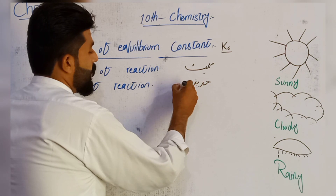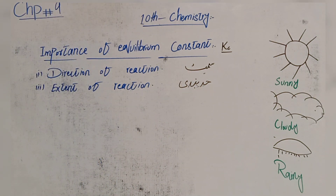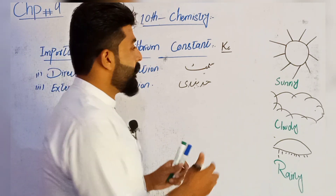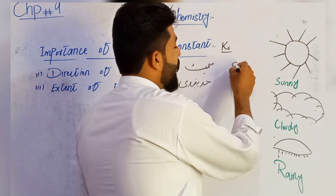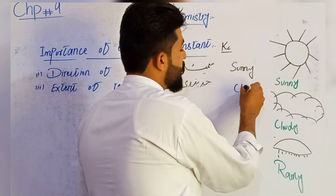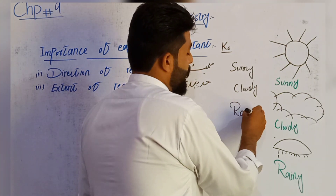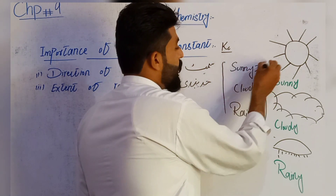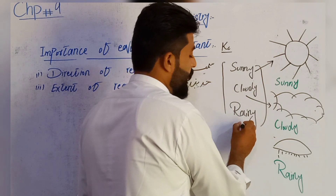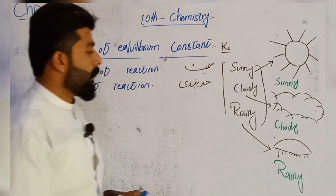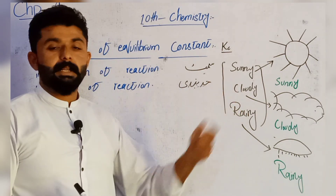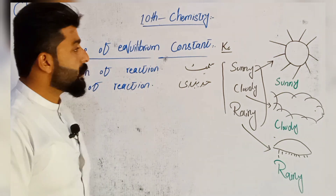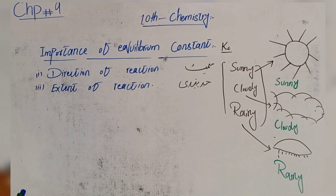Reaction کی جو حد بندی ہے وہ کیسے ہوتی ہے، اس کی ایک simple example دیتا ہوں۔ جیسے محکمہ موسمیات والے broadcast کرتے ہیں کہ weather تین مختلف conditions پر مشتمل ہوتا ہے: دھوپ، گرمی، اور ٹھنڈ۔ اسی طرح ہم نے reaction کی سمت اور اس کی حد بندی دیکھنی ہوتی ہے۔